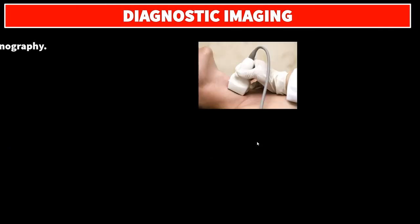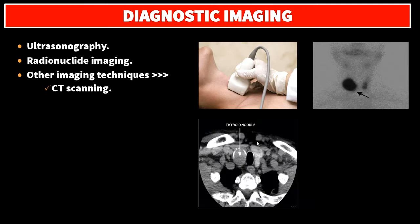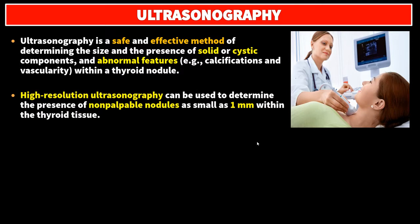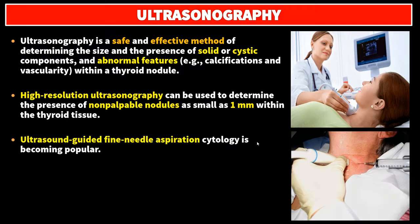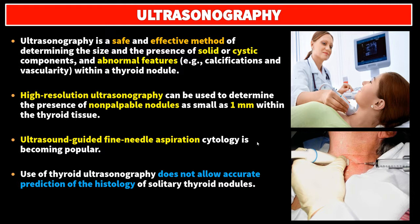Diagnostic imaging includes ultrasonography, radionuclide imaging, and other imaging techniques including CT scanning and MRI. Ultrasonography is a safe and effective method of determining the size and presence of solid or cystic components, and abnormal features such as calcifications and vascularity within a thyroid nodule. High-resolution ultrasonography can detect non-palpable nodules as small as one millimeter within the thyroid tissue. Ultrasound-guided fine needle aspiration cytology is becoming popular.